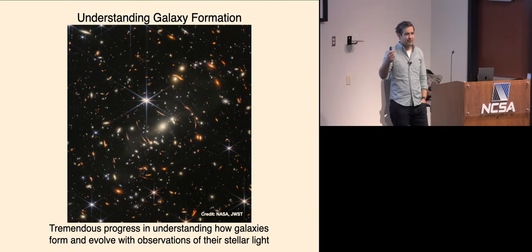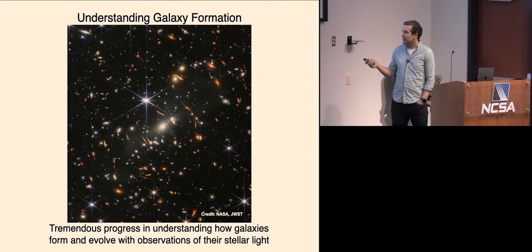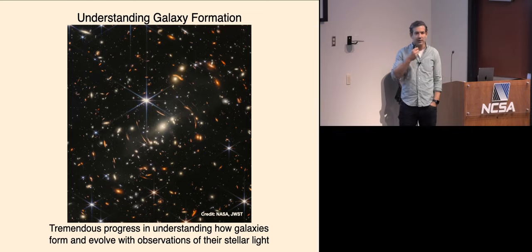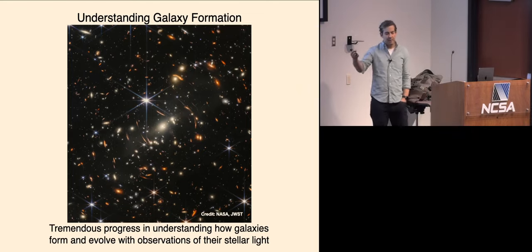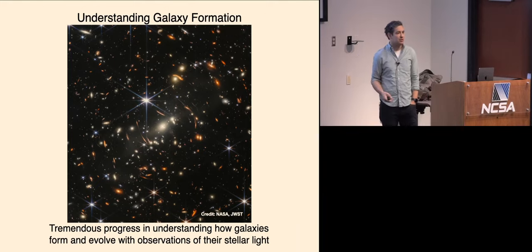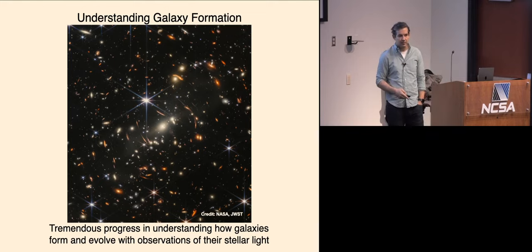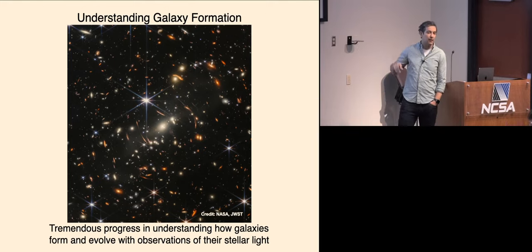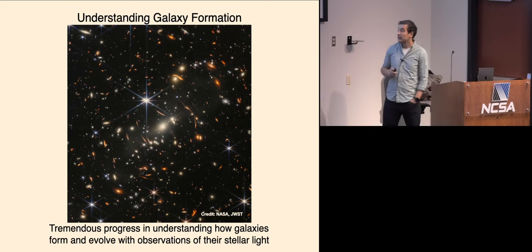What we have is just snapshots of galaxies over time. A lot of this has been done by looking at the stellar properties of galaxies — the Hubble deep fields, now the JWST deep fields — and trying to piece together how things change: how the luminosity function is changing, how the morphology of galaxies is changing, the star formation rates. This is where a lot of work and progress has been made.